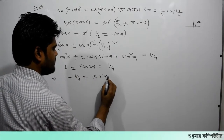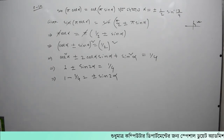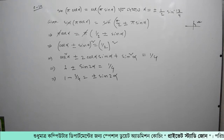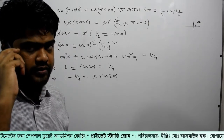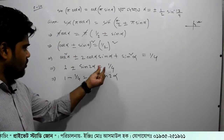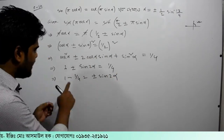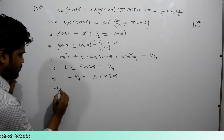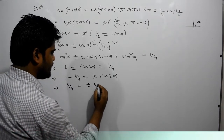So here we can see that 1 minus 1 by 4 is equal to plus minus sin inverse 2 alpha. So what we have done: 1 by 4 is equal to 1 minus sin alpha and 2 alpha; plus minus 2 is equal to minus 2; 1 minus 2 equals minus 2, and minus 3 equals minus 1. So 3 by 4 is equal to plus minus sin 2α.